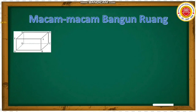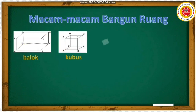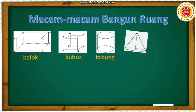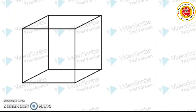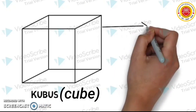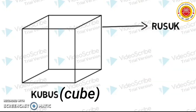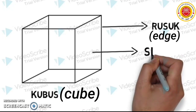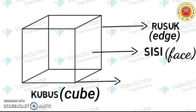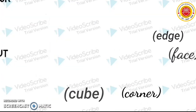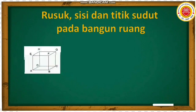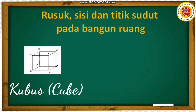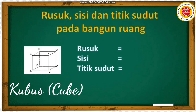Ada macam-macam bangun ruang yaitu balok, kubus, silinder atau tabung, kerucut, dan bola. Bangun ruang kubus atau cube memiliki rusuk atau edge, sisi atau face, dan titik sudut atau corner. Sekarang kita mau melihat bagaimana caranya menentukan jumlah rusuk, sisi, dan titik sudut pada bangun ruang. Miss punya contoh sebuah bangun ruang yaitu kubus atau cube. Sekarang kita akan menentukan rusuk, sisi, dan titik sudut.